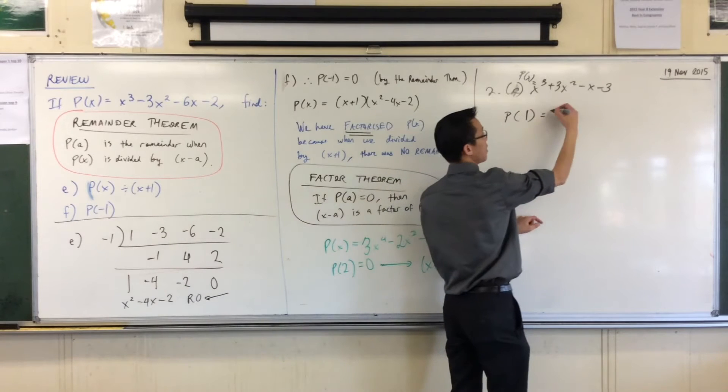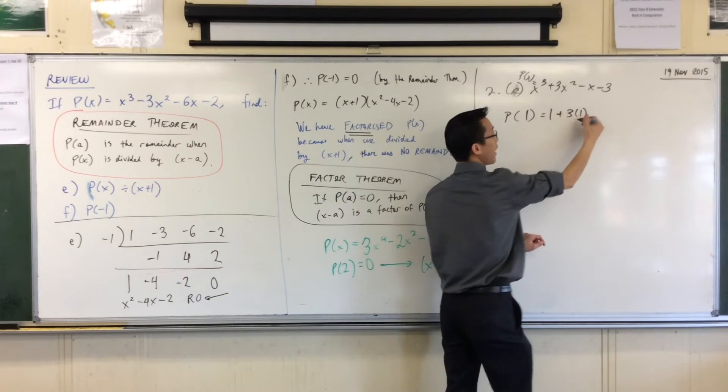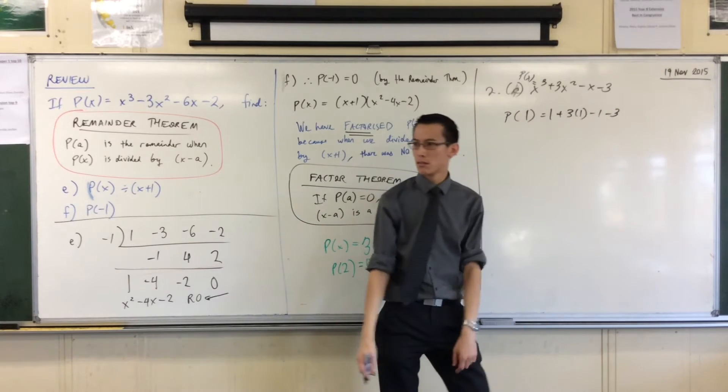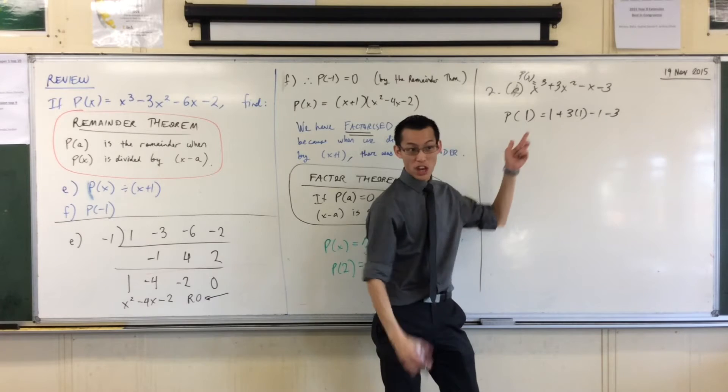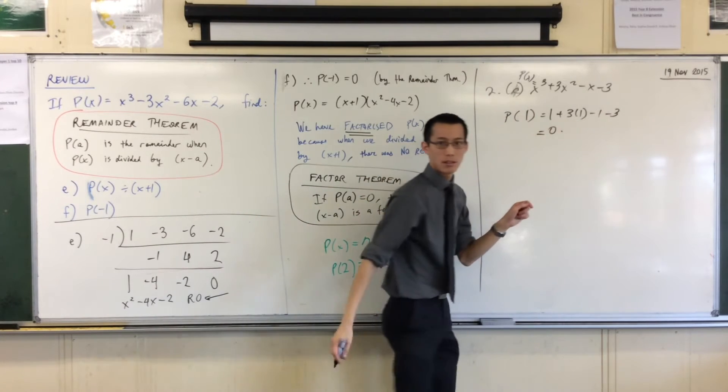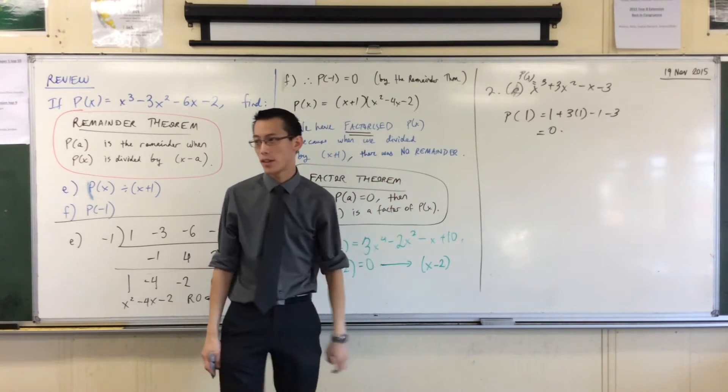It's not hard. Look. This is going to be 1 cubed, which is 1, plus 3 lots of 1 squared, which is also 1. Take away 1, take away 3. Look at my numbers. They all just match up. This 1 and this take away 1, this 3 and this negative 3. Nailed it. That's all you needed to show. Now I know that x minus 1 is a factor.